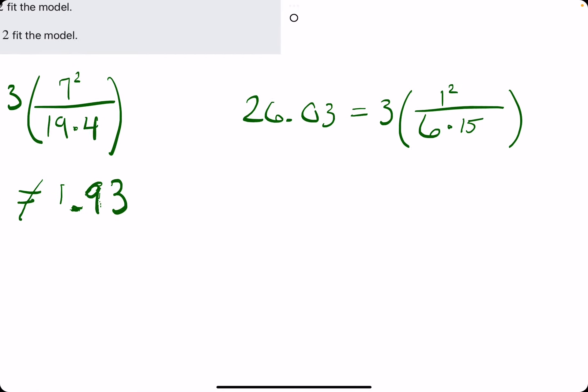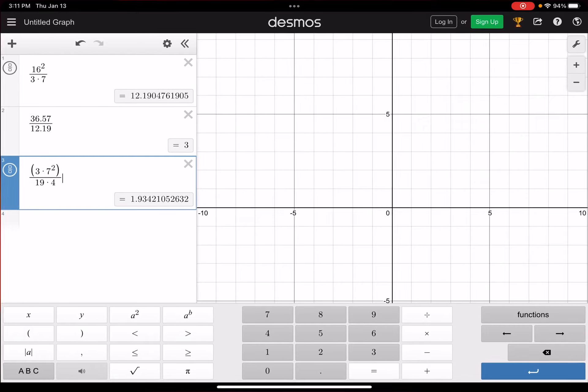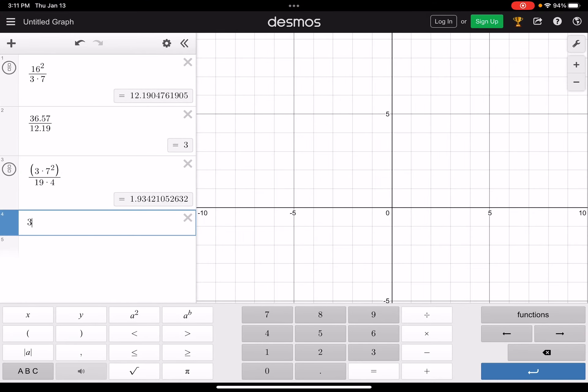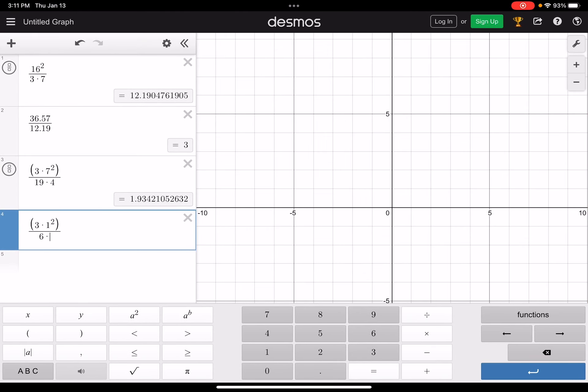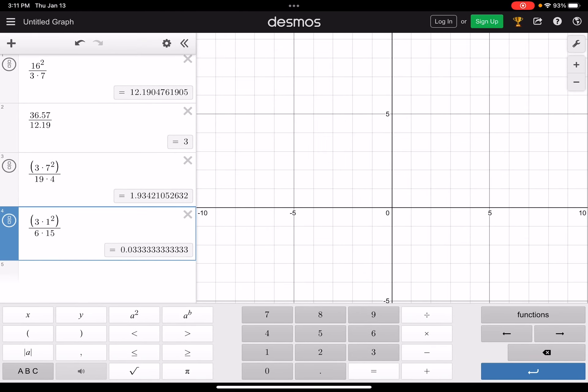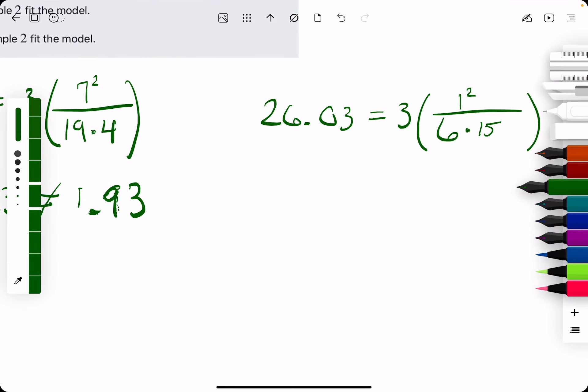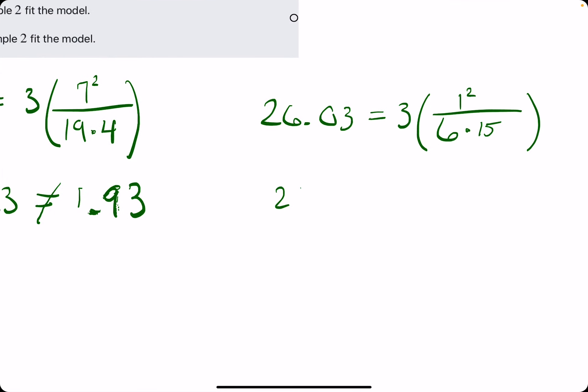And we calculate the right side just to make sure that it matches the left side. So 3 times 1 squared, all divided by 6 times 15. And that gives us about 0.03. So, unfortunately, 26.03 is not equal to 0.03.